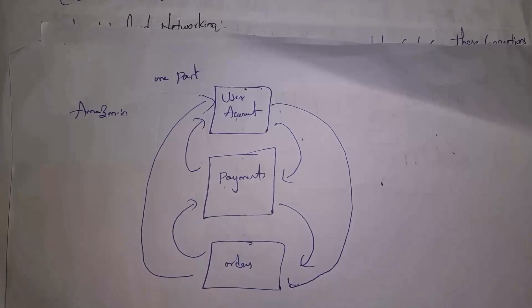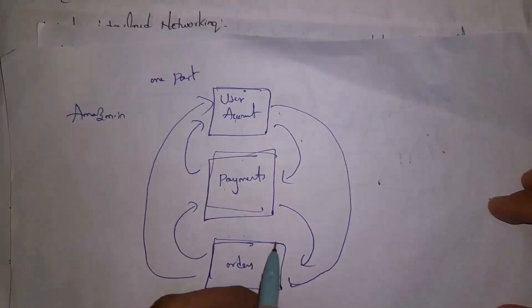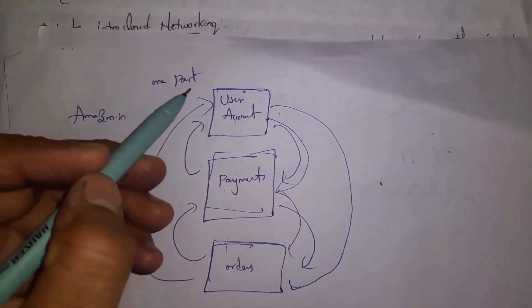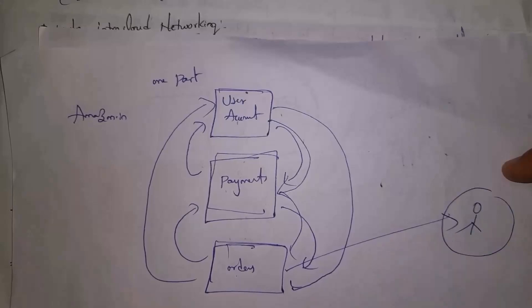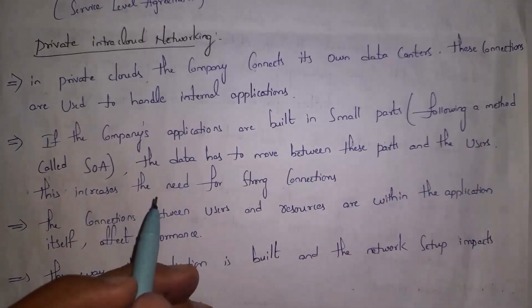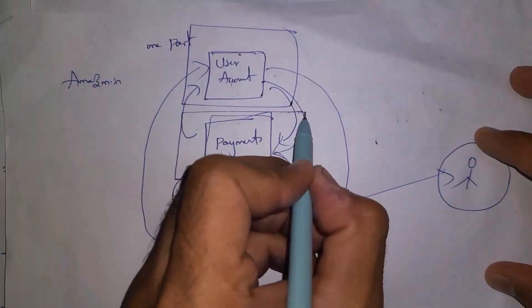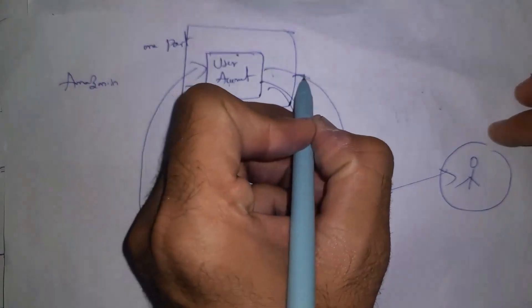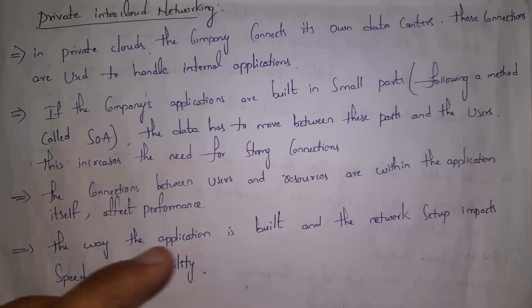For example, imagine a company created an application like Amazon, built in small parts: one part is user accounts, the next is payments, and the next is orders. Whenever a user makes a payment, we immediately need to place an order, so all parts of the application must communicate with each other. In this case we need a strong network connection. In a private cloud, each part of the application may be placed on a different server. Complete application performance depends on the network connection — if the connection between resources and users is not good, performance decreases. Application performance depends on how we build the application and how we set up the network.